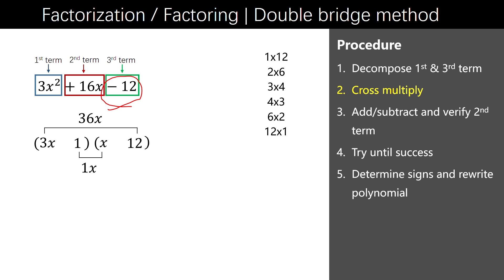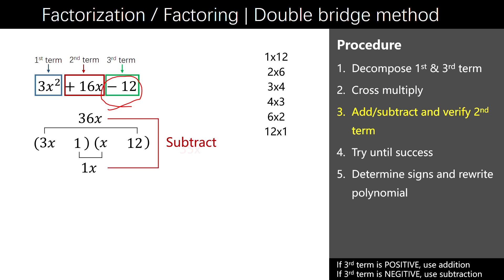Step 3. We subtract 1x from 36x because the third term is negative. However, the result is nothing close to the second term, 16x. So we go back to step 1 and try the combination of 2 and 6.